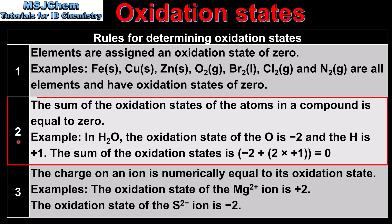Rule 2: the sum of the oxidation states of the atoms in a compound is equal to 0. For example, in H2O, the oxidation state of O is minus 2 and H is plus 1. The sum of those oxidation states equals 0, because compounds are neutral.